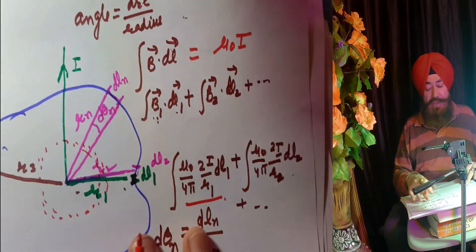So this formula is again applicable for any arbitrary shape and of any size. The only thing that matters is how much current the loop encloses.